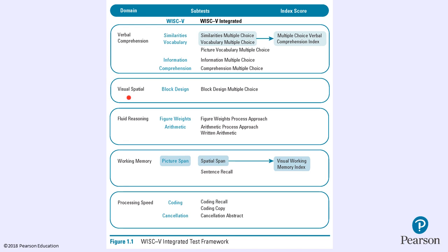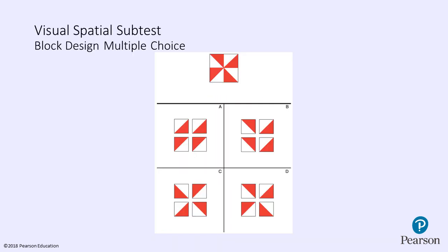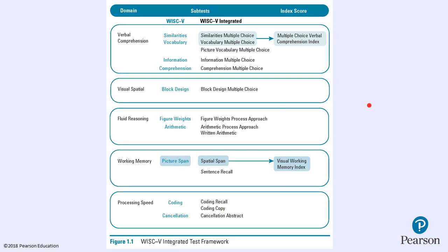On the Visual Spatial domain, there is a Block Design Multiple Choice subtest on the WISC-V Integrated. There is no motor production requirement — the child simply looks at a picture at the top of the page and selects which option depicts how the blocks would look when pushed together. To answer a question: this presentation is not only applicable to the WISC-V Integrated; it is applicable to the WISC-V as well. I'm just giving an overview of the integrated to show where some of these subtests are drawn from.